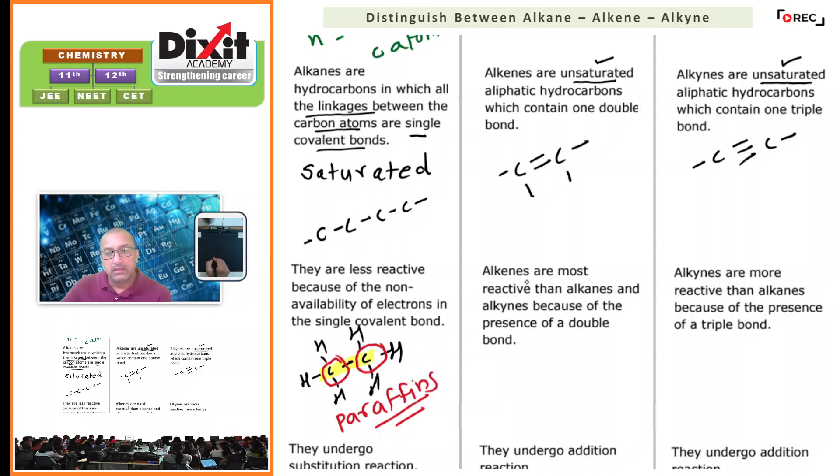In comparison with alkanes and alkynes, alkenes are most reactive because of the presence of a double bond. Remember, in the case of a double bond, one bond is a sigma bond and the other is a pi bond. Pi bonds are weaker than sigma bonds. Therefore, amongst these hydrocarbons, alkenes show more reactivity.